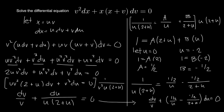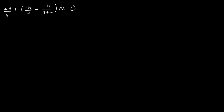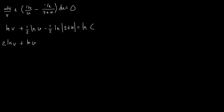We can now integrate. The first term gives ln(v), the next gives (1/2) ln(u), and the last gives −(1/2) ln(2 + u) = C. Multiplying the whole equation by 2: 2 ln(v) + ln(u) − ln(2 + u) = 2 ln(C).